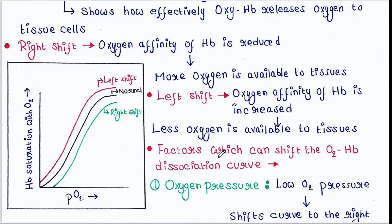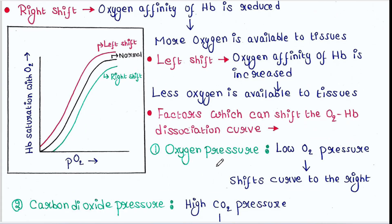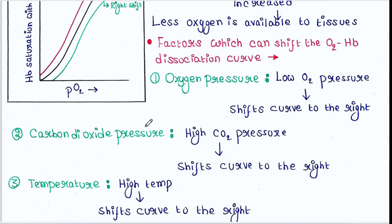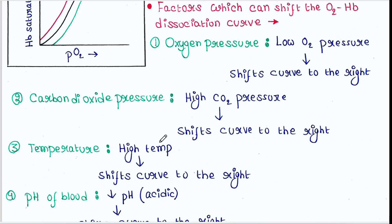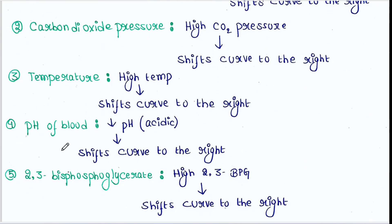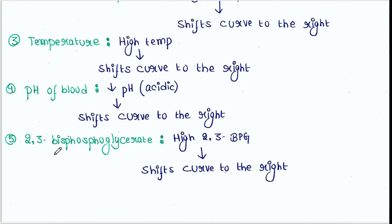Now let's look at factors that shift the oxyhemoglobin dissociation curve. If oxygen pressure is less, it shifts the curve to the right. If carbon dioxide pressure is high, it shifts the curve to the right. High temperature always shifts the curve to the right. If the blood is acidic — that means low pH — it shifts the curve to the right. And if 2,3-bisphosphoglycerate (2,3-BPG) concentration is high, it also shifts the curve to the right.